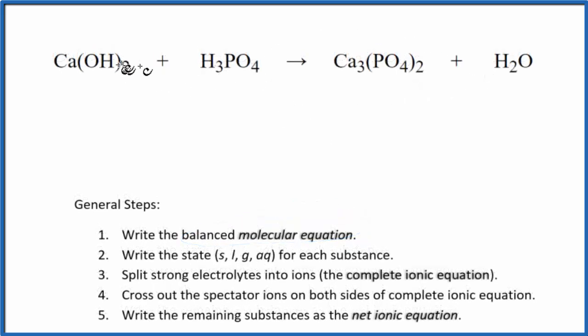To balance the molecular equation, I have three calciums there, put a three here. I see that I have two phosphate ions and only one here, I'm going to put a two here. So now I have 12 hydrogens. If I put a six here, that balances the molecular equation. If you need help with that, there's a link in the description.